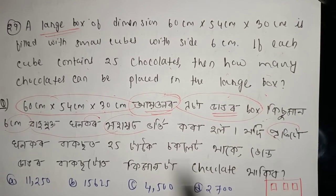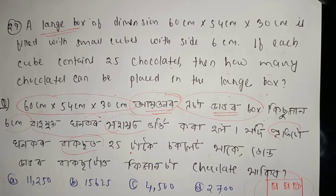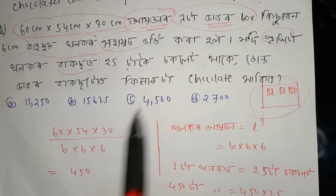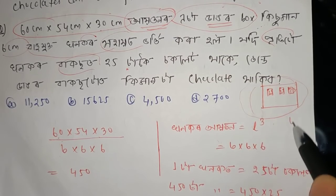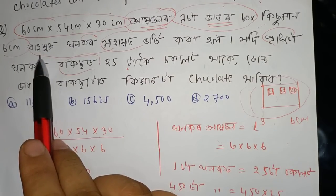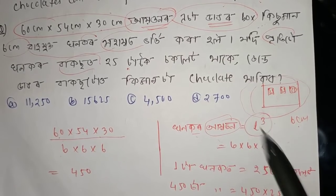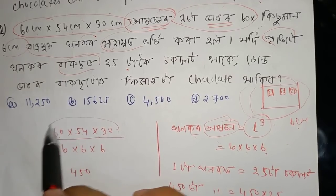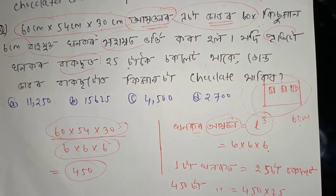We need to find how many small cubes fit in the large box. The volume of the large box is 60 × 54 × 30. The volume of each small cube is 6 × 6 × 6. Dividing: number of cubes = (60 × 54 × 30) ÷ (6 × 6 × 6). That gives approximately 450 cubes.